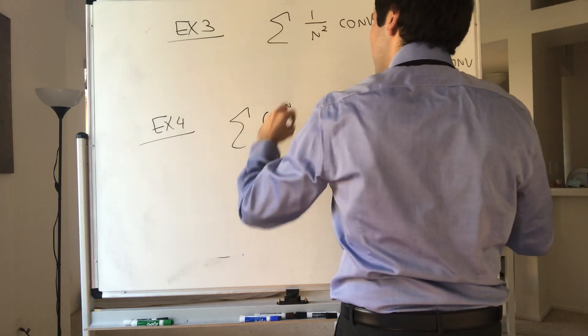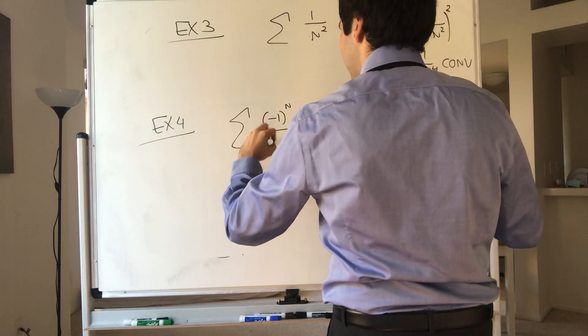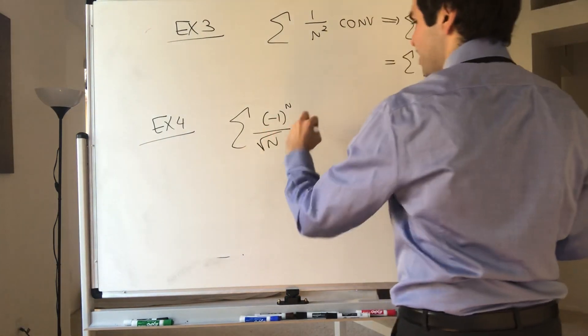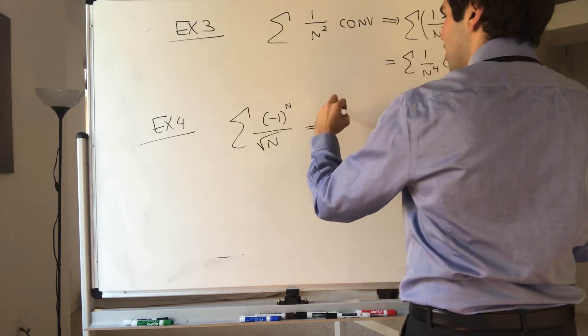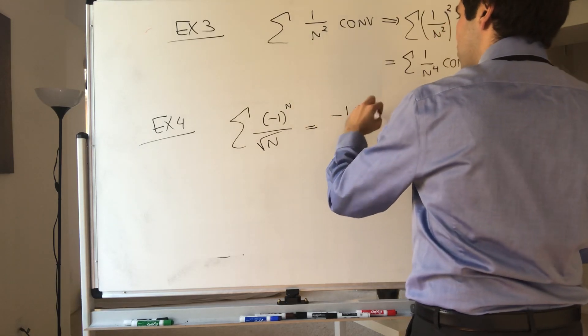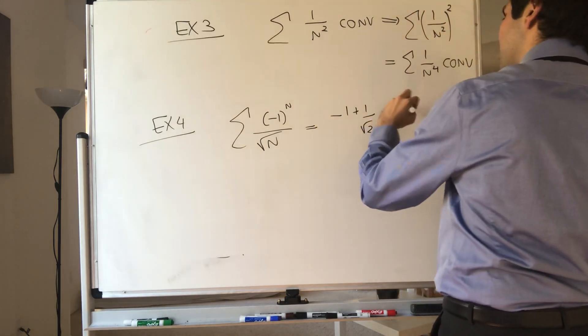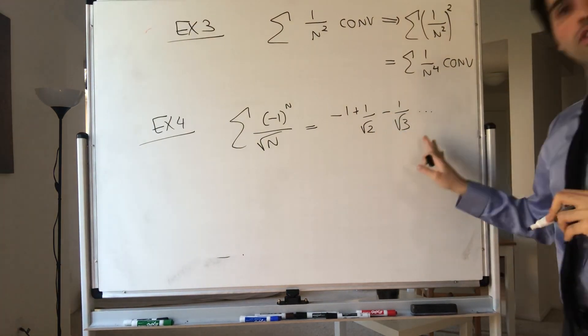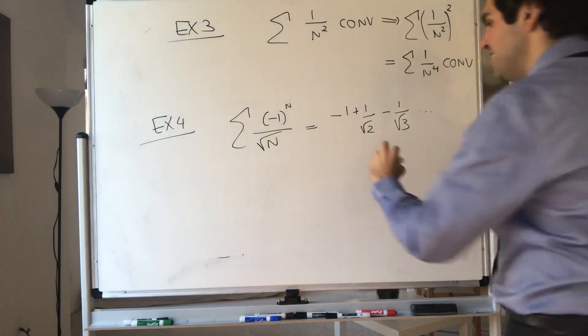Consider the series minus one to the n over square root of n, which if you want, is just minus one plus one over square root of two, minus one over square root of three, dot dot dot. Well, this one converges by the alternating series test.